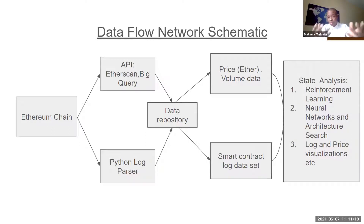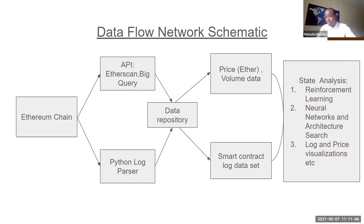There are two divergent ways in which you could have viewed this particular project. You could have effectively looked at just pricing and volume data of Ether and asked what the ETH price is doing and how we can analyze it. Or you could have gone deeper into smart contract log datasets. The various ways to conduct this analysis include reinforcement learning, various neural networks, and neural architectures — all well-documented in academic literature — as well as simple log and price visualizations.